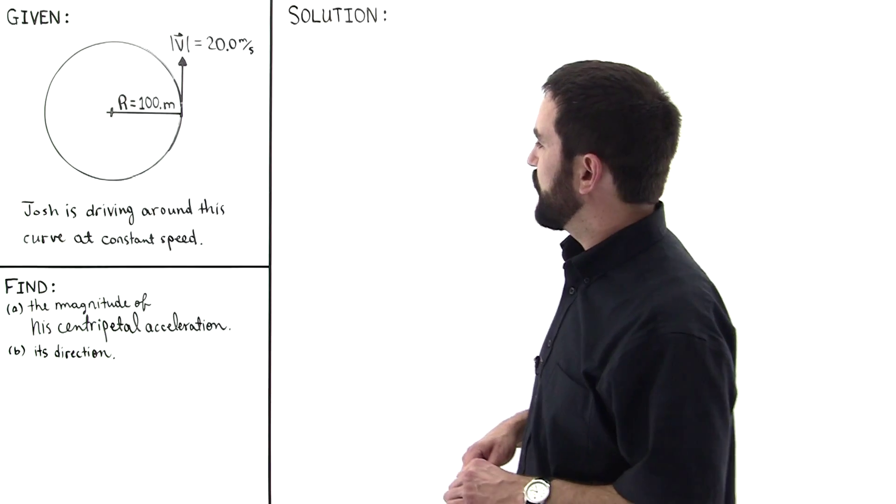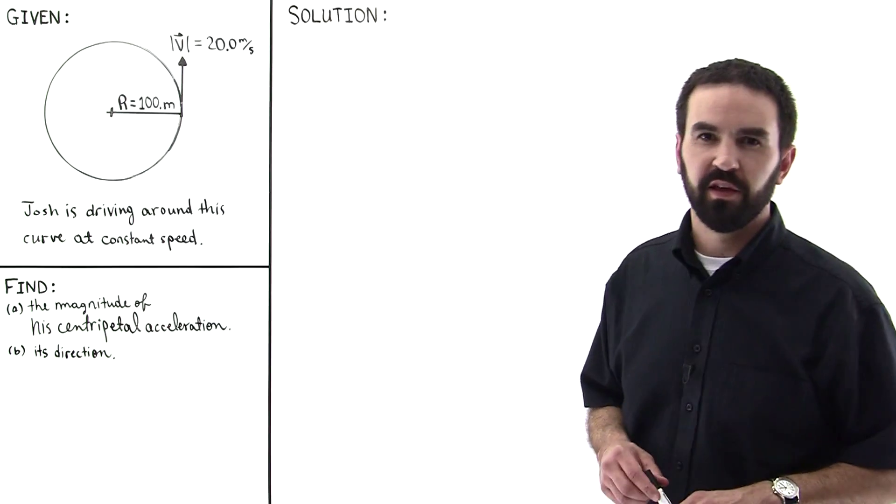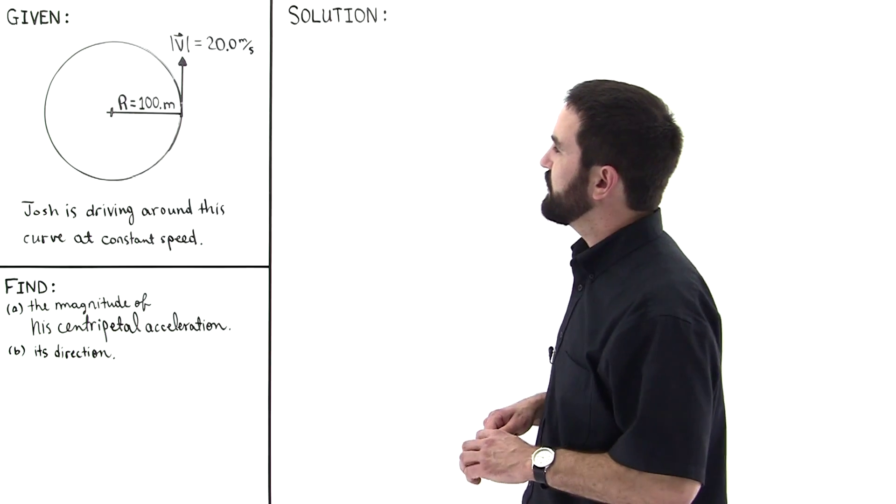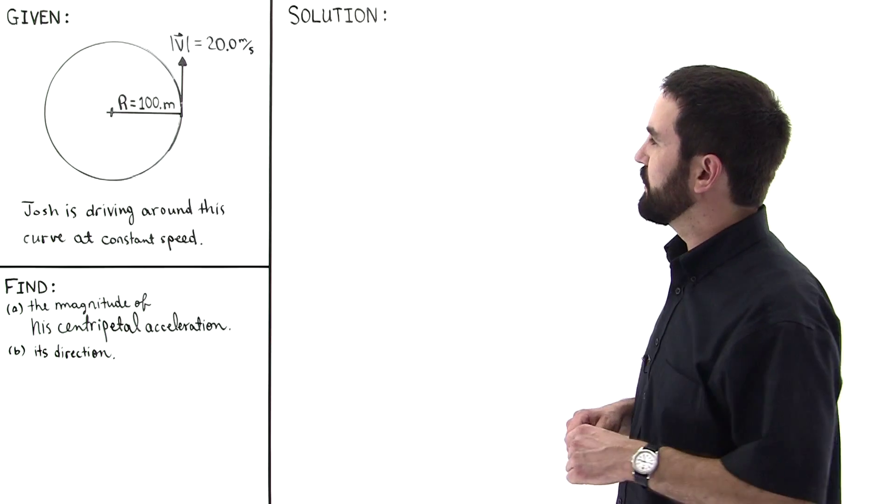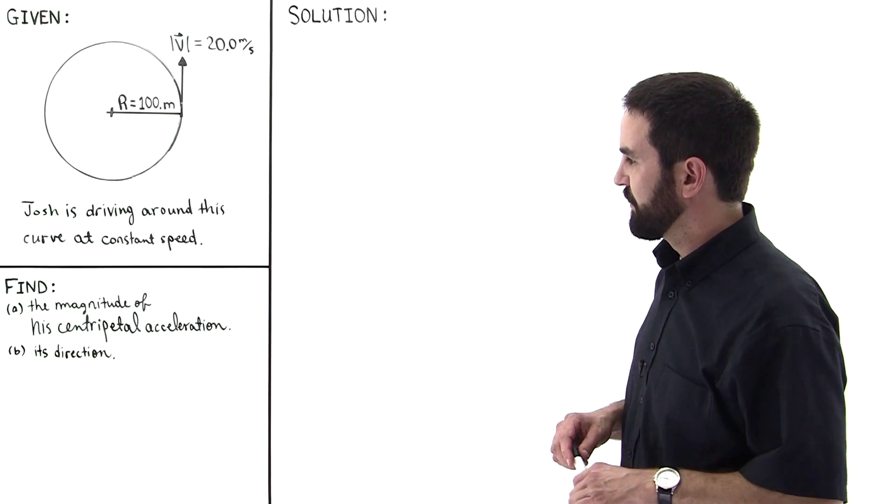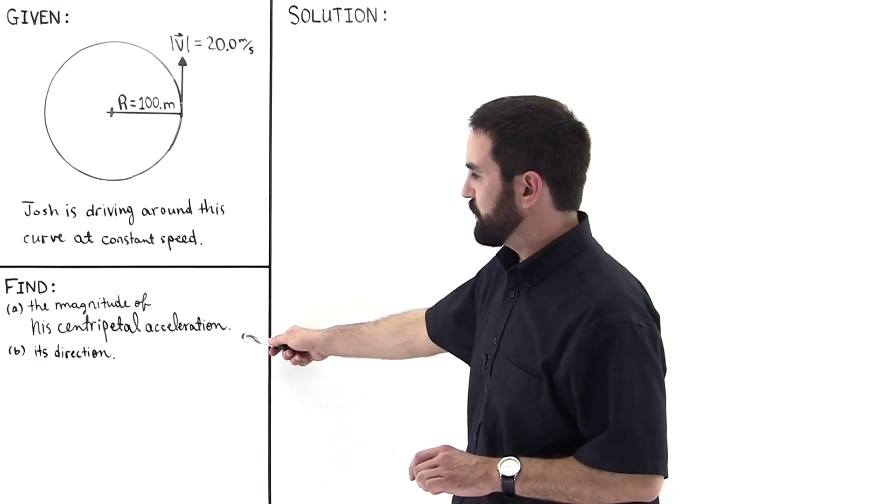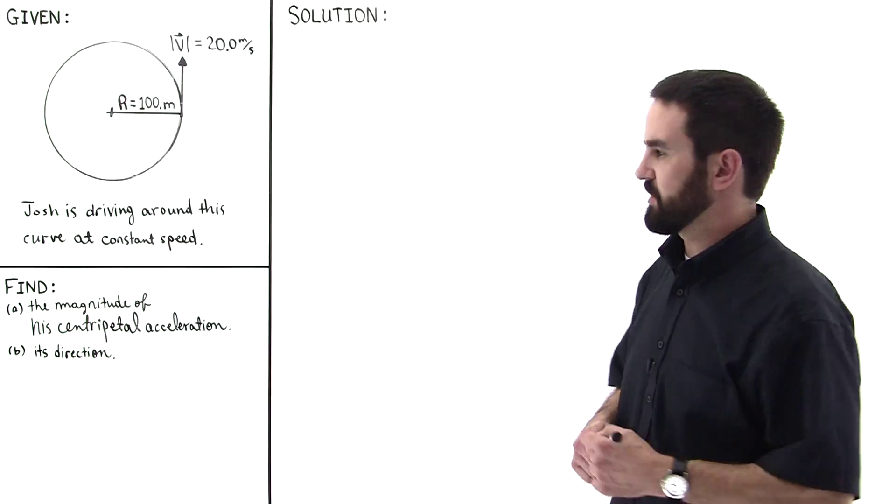Josh is driving around this curve at constant speed. The curve has a radius of 100 meters and his velocity has a magnitude of 20 meters per second. We're asked to find the magnitude of his centripetal acceleration and its direction.